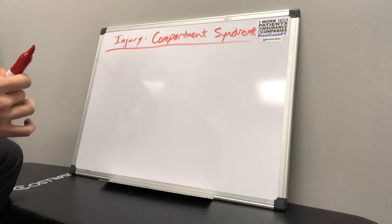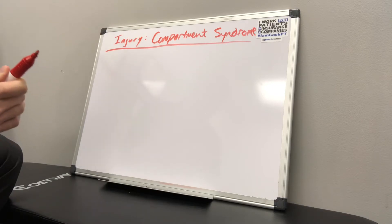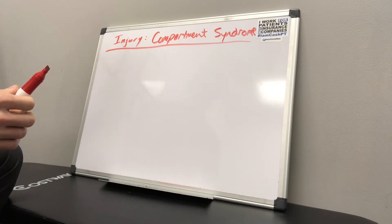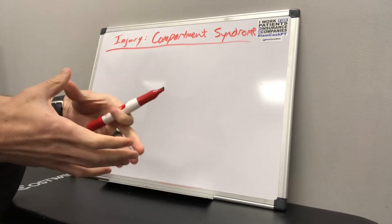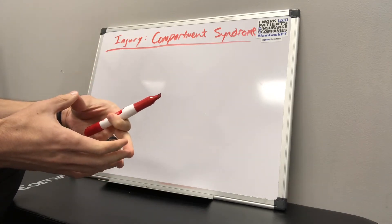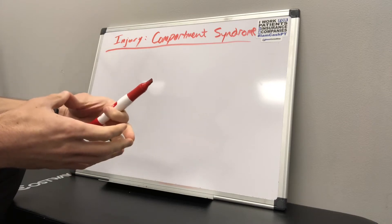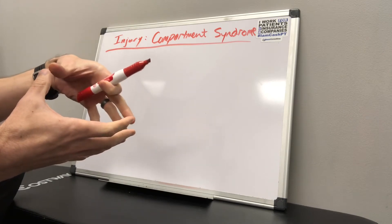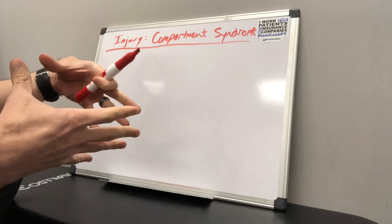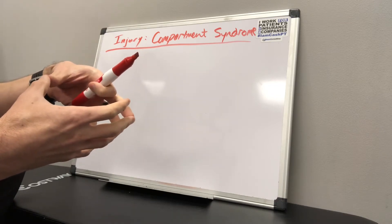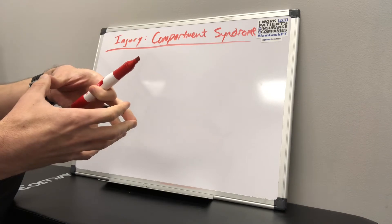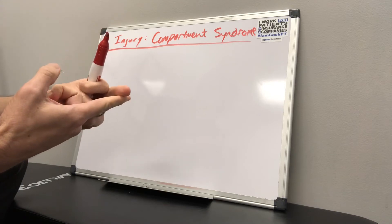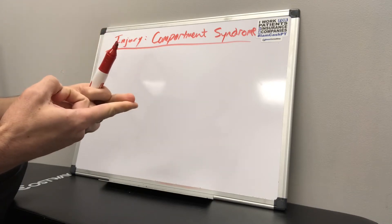When the person started developing what's called a drop foot, there was a little bit more concern. Compartment syndrome is where there's fascia that encapsulates a group of muscles, and if there is too much swelling inside that fascial encapsulation, it will start pushing against the fascia. When there's not enough space or flexibility in that tissue, you start to get compression of the muscles inside that fascia.